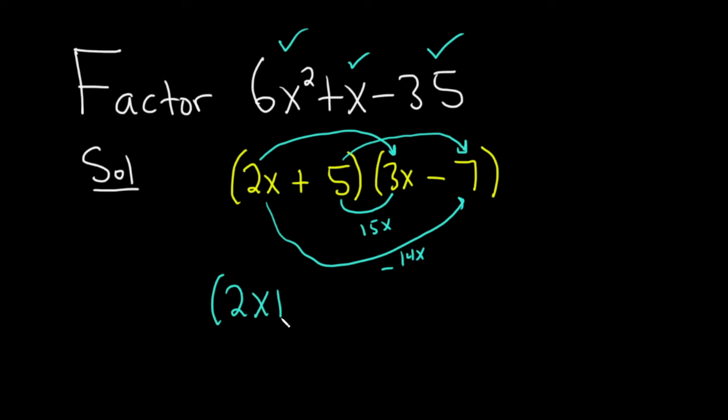The answer is (2x + 5)(3x - 7). That's the final answer. Good luck.